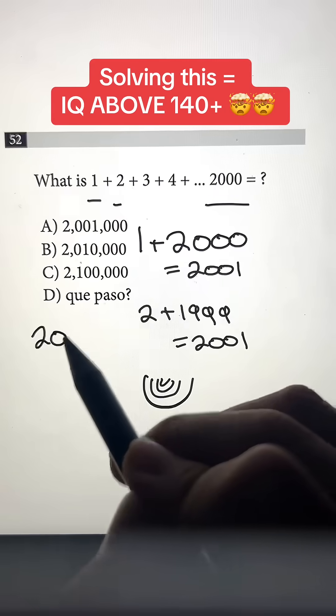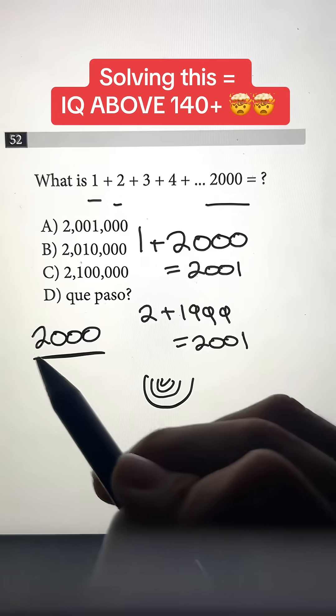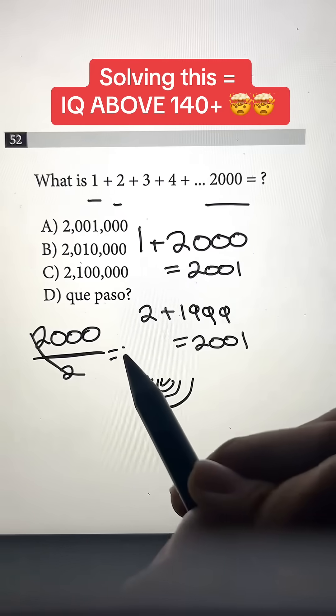Now we just need to find out how many pairs there are. That's very easy to do. So from 1 all the way to 2,000, there's going to be 2,000 numbers and there's two numbers per pair. So we're going to divide 2,000 by 2. We cancel out the 2s and that's going to give us 1,000.